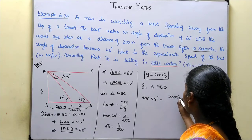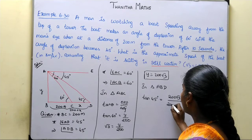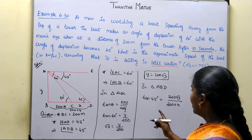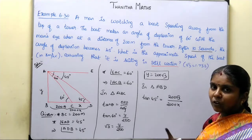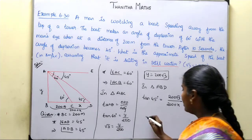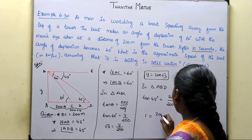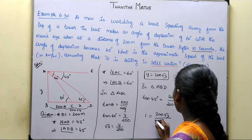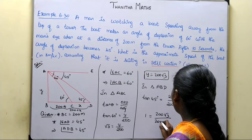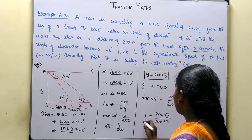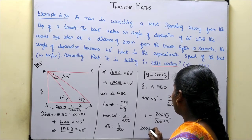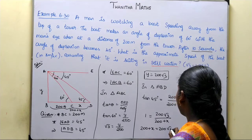Now using the second triangle: tan 45 equals y divided by (200 plus x), which equals 200 root 3 divided by (200 plus x). Since tan 45 equals 1, we get 1 equals 200 root 3 divided by (200 plus x), so 200 plus x equals 200 root 3.